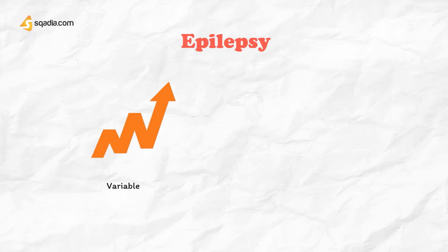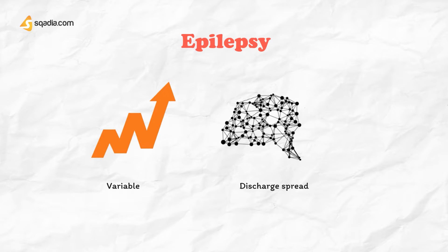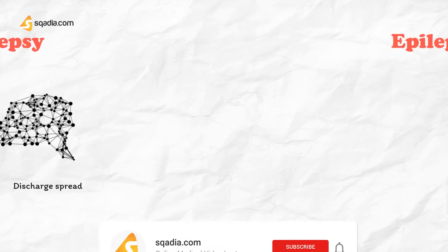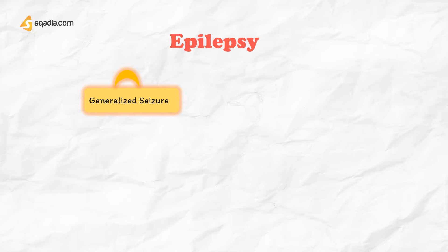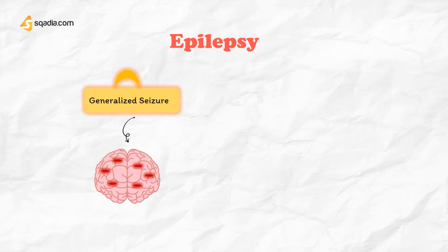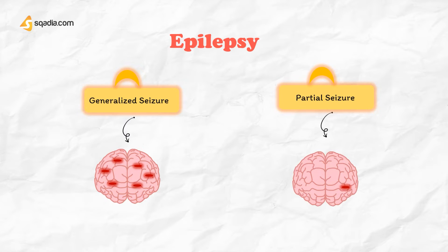Epilepsy has a focal origin in the brain. Manifestations depend on the site of the focus, regions into which the discharges spread, and postictal depression of these regions. Epilepsies have been classified variously. Major types are described as generalized seizures, which start when all areas of the brain are affected by an abnormal electrical impulse, and partial seizures, which happen when unusual electrical activity affects a small area of the brain.